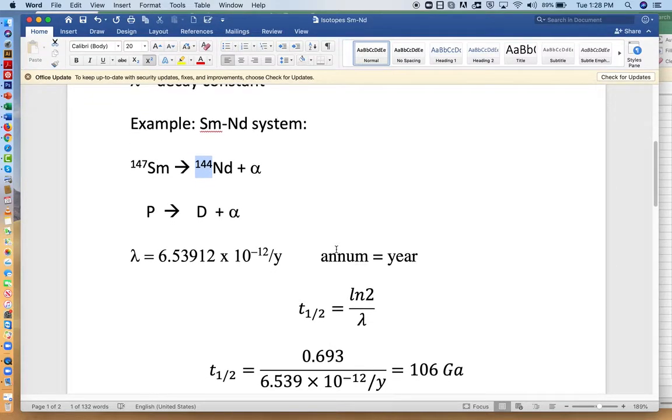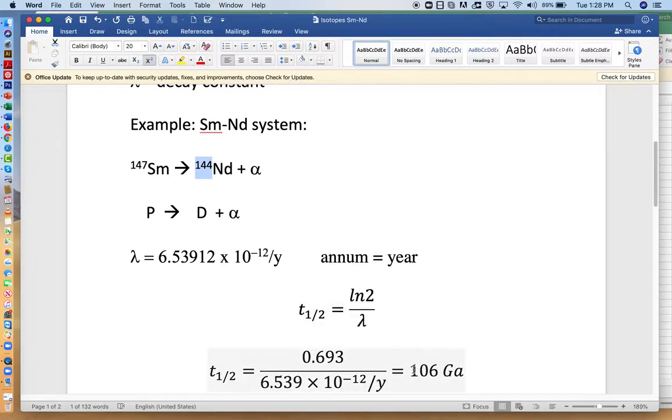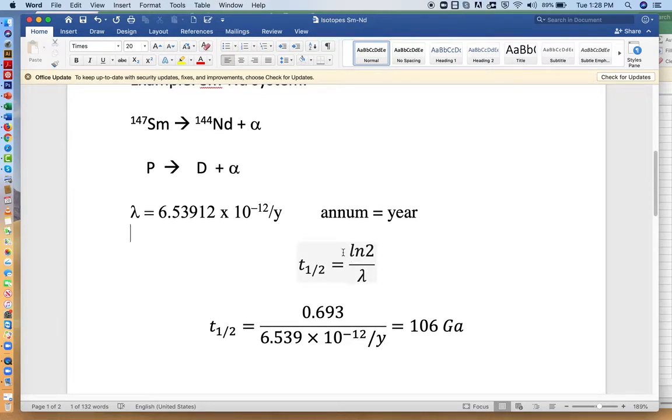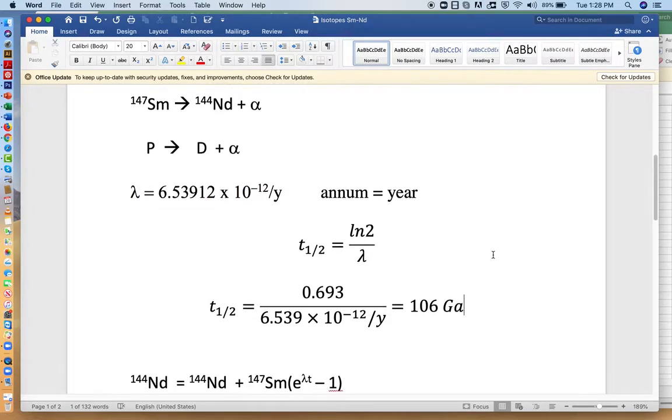The half-life is quite a bit longer, 106 million years. The decay constant is what we're going to use. Lambda is this value here, 6.5 times 10 to the minus 12. We looked at this before. So you can make that same calculation to go from a decay constant to a half-life or vice versa. I recommend checking to see that I've done that math correctly.